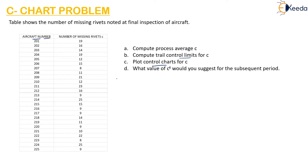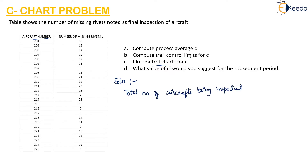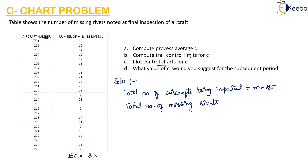For the solution, the total number of aircraft being inspected is 25, so M equals 25. The total number of missing rivets — for each aircraft the number of missing rivets is given, and if you add them all up, sigma C, the total number of defects, is 351.